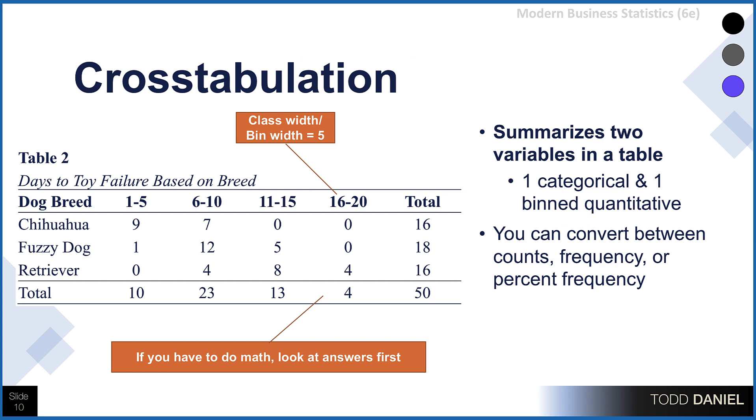Cross-tabulation is used to summarize two variables in a single table. For this example, I have one categorical variable and a continuous variable which I have put into four bins with a class width of five. I summarize the relationship between these variables as days to toy failure based on breed. In this case, I'm displaying counts for simple frequency, but in Excel or in other statistical software, you can choose to display counts, frequency, percent frequency, and usually other options, none of which we will use in this class.